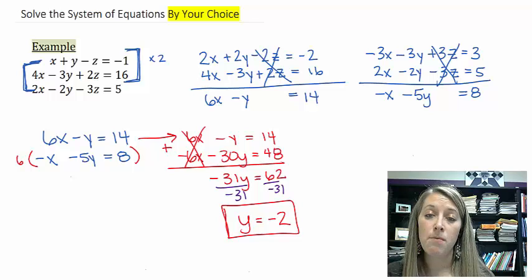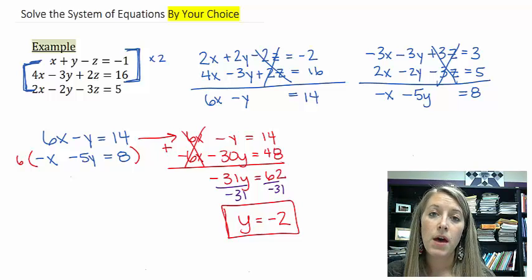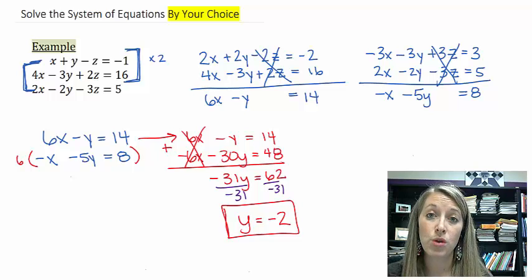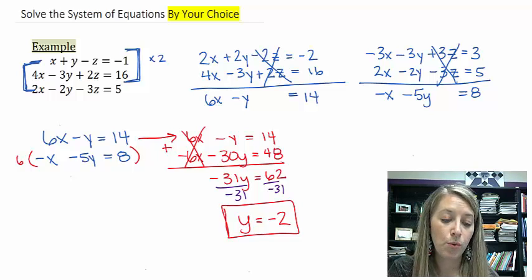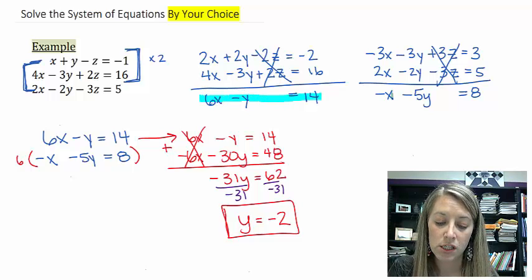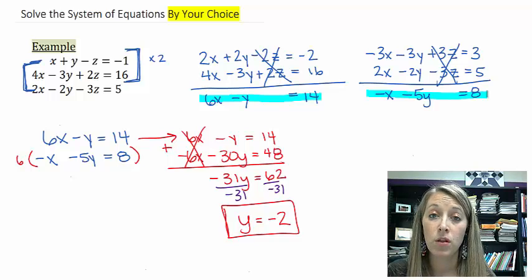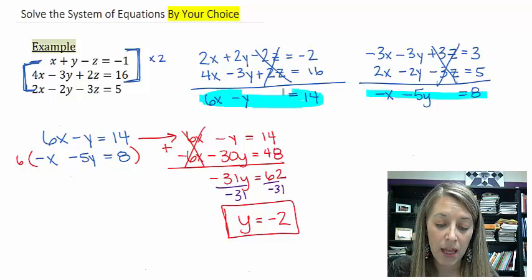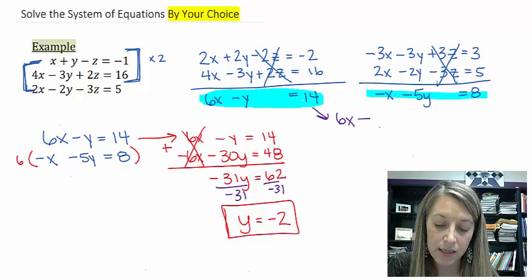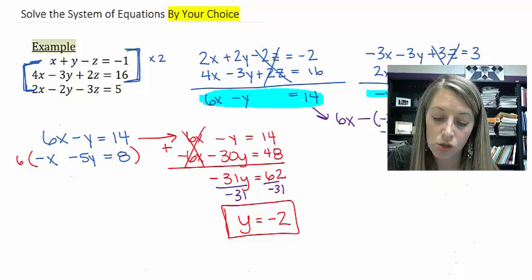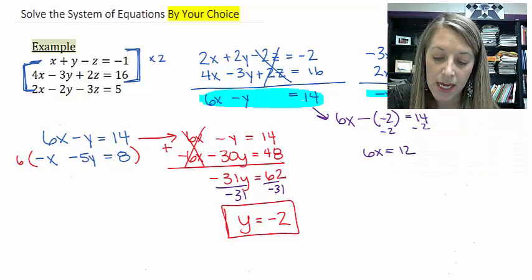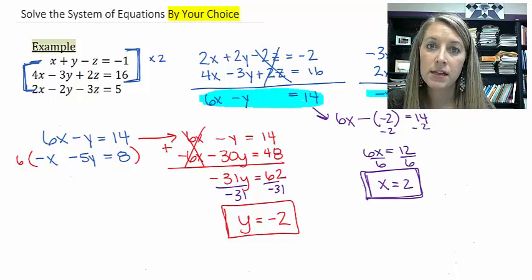Now, your instinct might be to plug it back into one of the original equations, but that doesn't do us any good because that has three variables in it. So what we need to do is we need to plug it back into one of the equations with two variables in it, either this one or this one. It doesn't matter. Whichever one looks the easiest to you. I'm going to plug it back into this one. So that gives me 6x minus, where my y is a negative 2, is equal to 14. So this is positive 2. If I were to subtract 2 from both sides, that gives me 6x is equal to 12. Divide by 6, and so that gives me x is equal to 2. So that gives me a second variable.